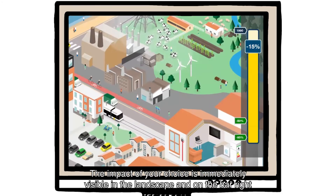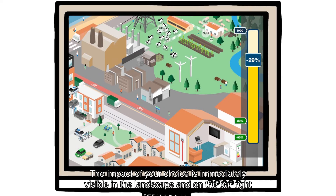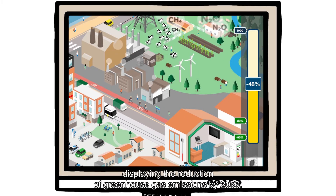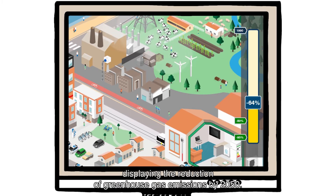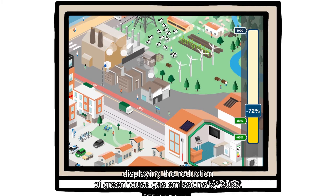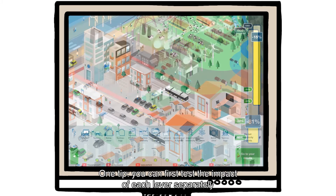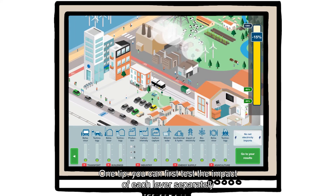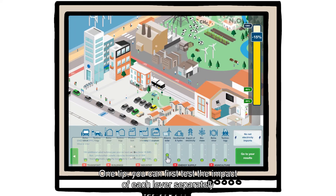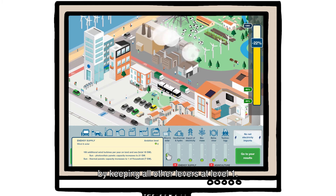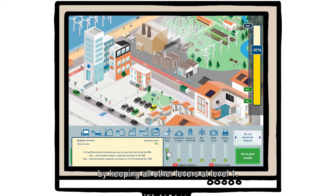The impact of your choice is immediately visible in the landscape and on the bar displaying the reduction of greenhouse gas emissions by 2050. One tip: you can first test the impact of each lever separately by keeping all other levers at Level 1.